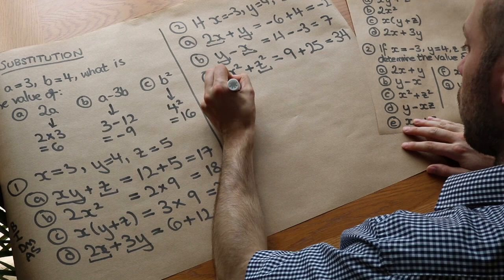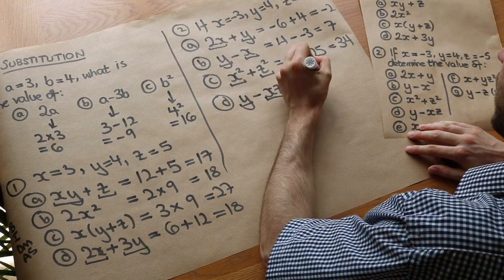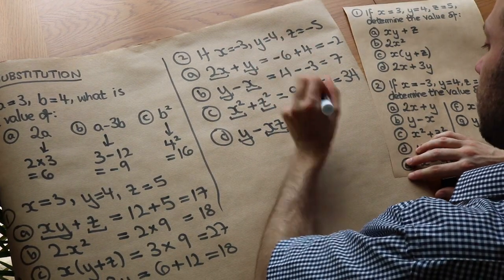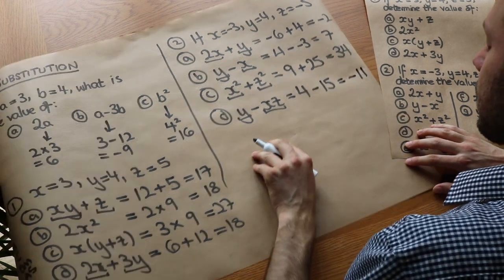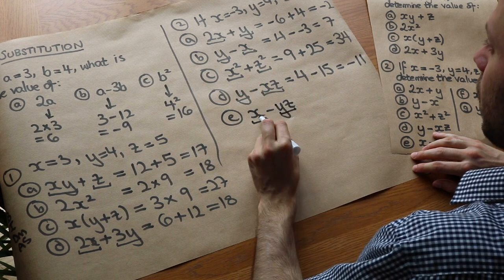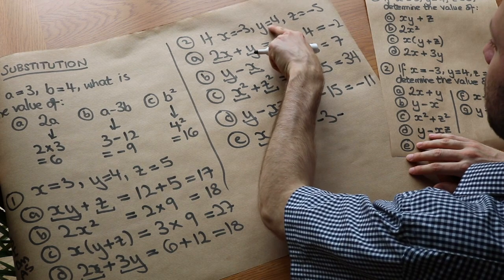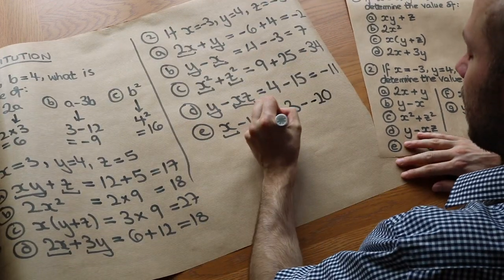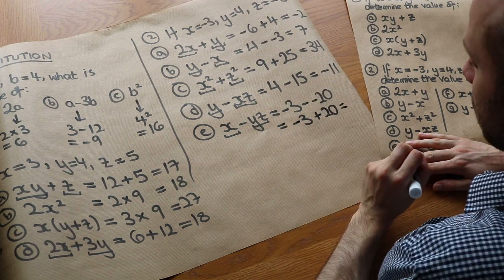Next, d: y minus xz. y is 4. Then x times z is minus 3 times minus 5 — negative times negative is positive, so it's positive 15. So it's 4 minus 15, which is minus 11. Then e: x minus yz. x is minus 3, minus, then y times z is 4 times minus 5 — positive times negative is negative, so it's negative 20. We're subtracting a negative, so minus 3 minus negative 20 becomes minus 3 plus 20, which is positive 17.